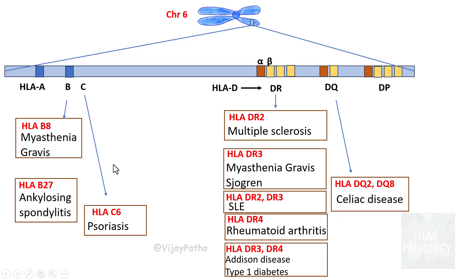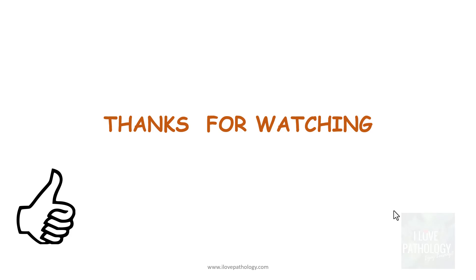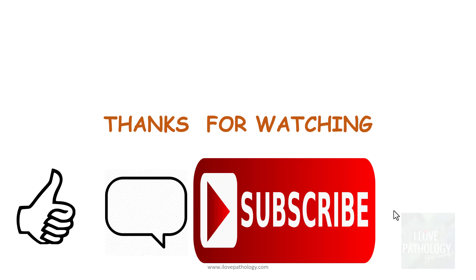To remember: myasthenia gravis, ankylosing spondylitis, and psoriasis are common examples associated with class 1 HLA, whereas class 2 associations include multiple sclerosis, SLE, rheumatoid arthritis, type 1 diabetes, and celiac disease. That covers HLA/MHC — we learned about the structure of MHC molecules, their significance, and associated diseases. Thank you for watching. If you liked this video, hit the like button, comment, and subscribe. From the next session we will discuss hypersensitivity reactions, starting with type 1 hypersensitivity.